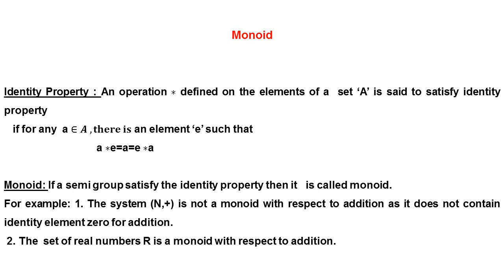We use identity property in monoids. If a semi-group satisfies the identity property, then it is called a monoid. A semi-group holds closure property and associative property; a monoid additionally holds identity property. For example, the system N+ is not a monoid with respect to addition because it does not contain the identity element 0. However, the set of real numbers R with respect to addition is a monoid, because any two real numbers added together still belong to R.